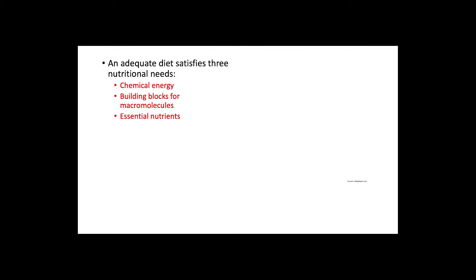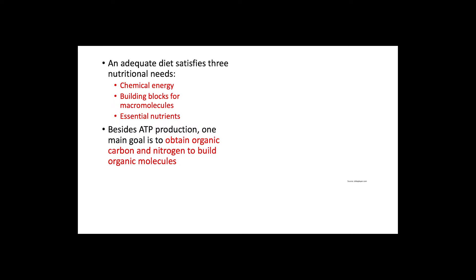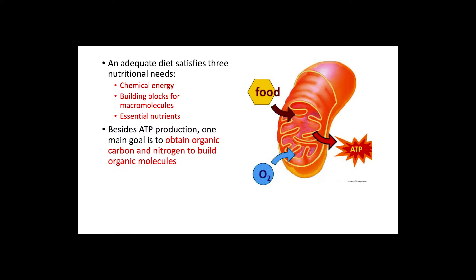An adequate diet must satisfy three nutritional needs: chemical energy, building blocks for macromolecules, and essential nutrients. One of the major goals for biological systems is to make energy in the form of ATP. However, animals must also obtain organic carbon and organic nitrogen to build organic molecules, such as proteins and nucleic acids. A third requirement is to get essential nutrients, which animals cannot synthesize and must obtain from the food they eat.